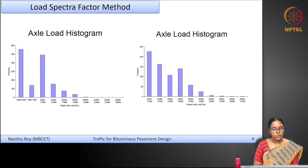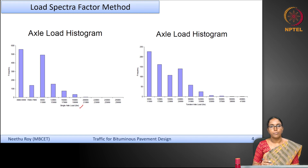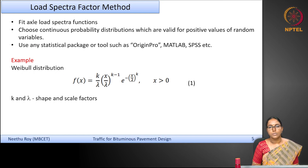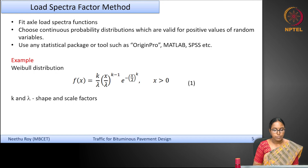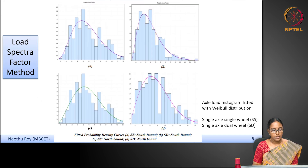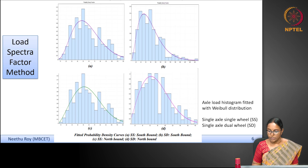Here you can see the axle load histograms plotted for a single axle load and a tandem axle load. For this data you can fit appropriate distribution functions. You have to choose continuous probability distributions valid for positive values of random variables. Statistical packages like SPSS, OriginPro, MATLAB, or R programming can be used to fit these functions. As shown, there is an example of a Weibull distribution used to fit certain data — the density curves are fitted for a single axle single wheel and a single axle dual wheel in two directions of traffic.